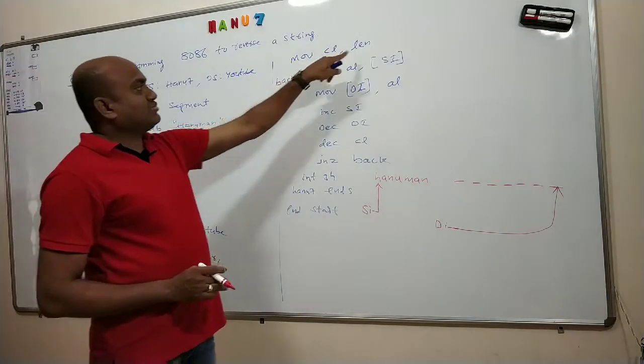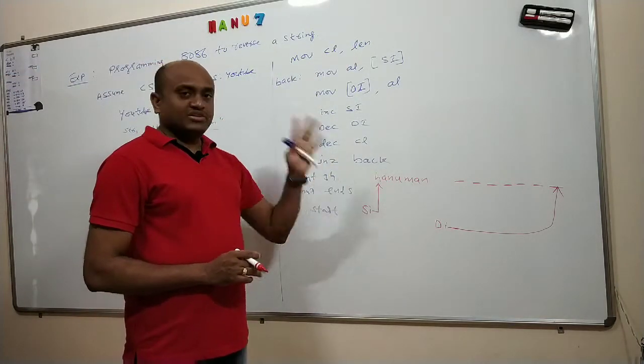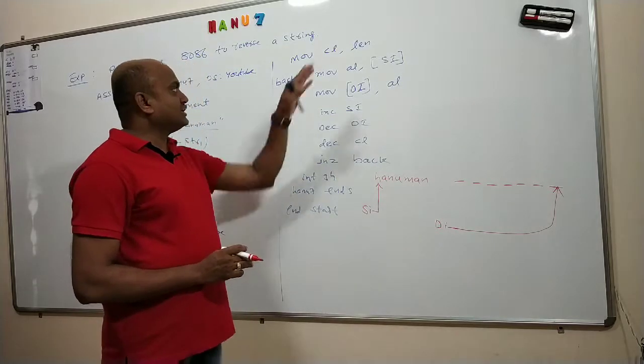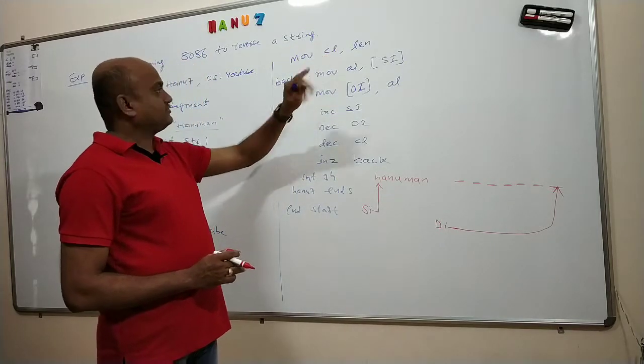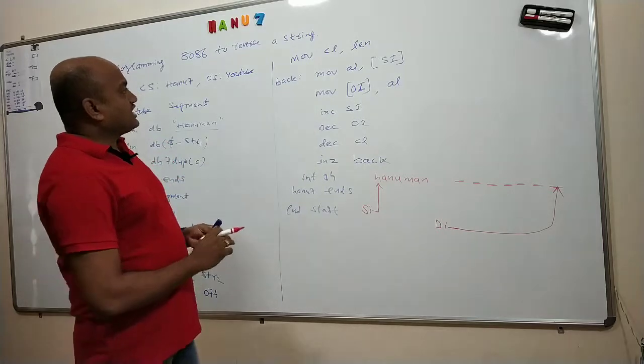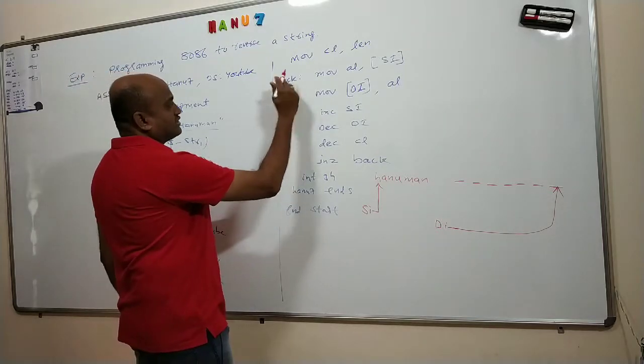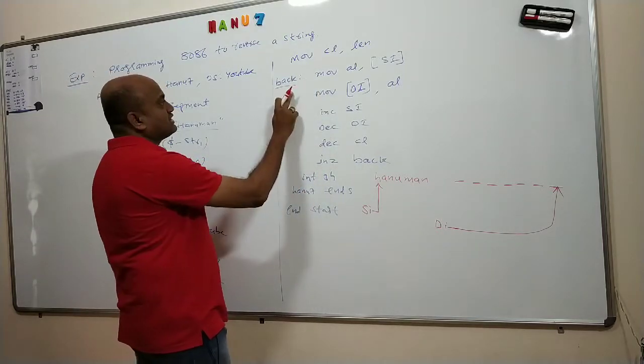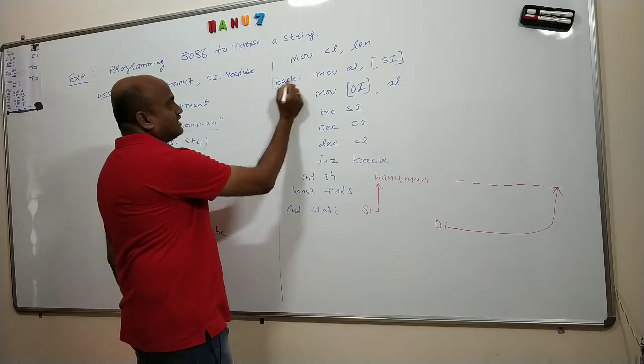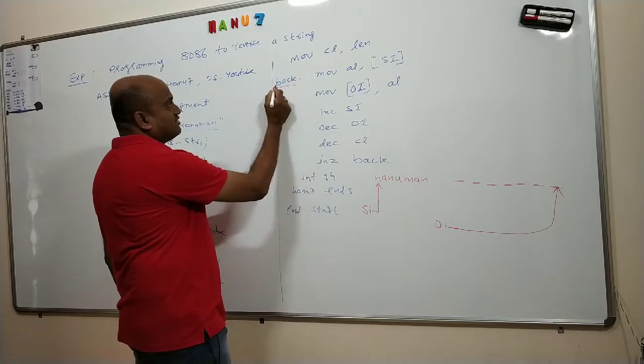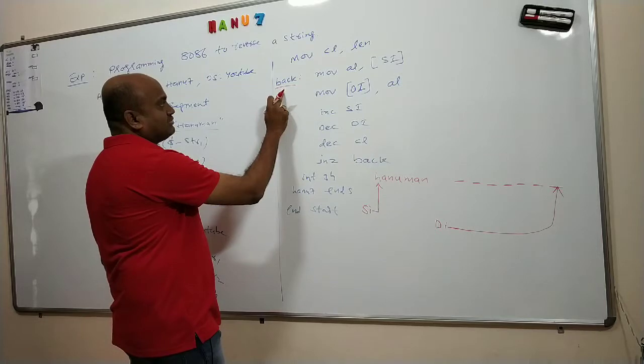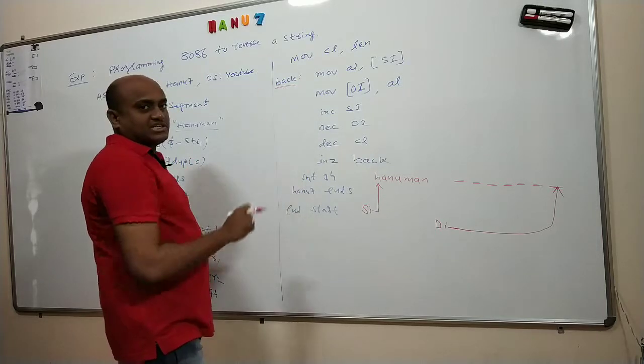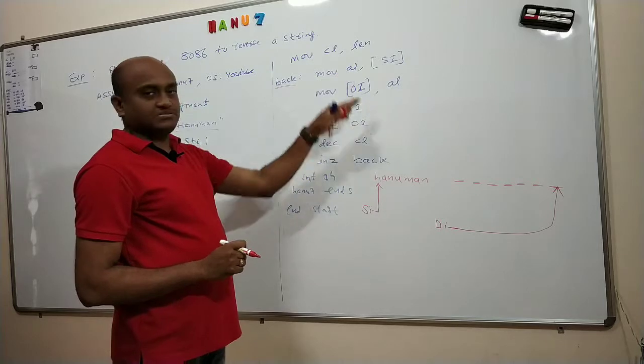Then after that, move CL comma length. As usual, how many number of times I have to move will be stored by the length. So put that value into CL. CL is a default counter. Then I used a label back. I want to insert a loop in the program. This back label will help us to repeat this number of steps for 7 times in this program.